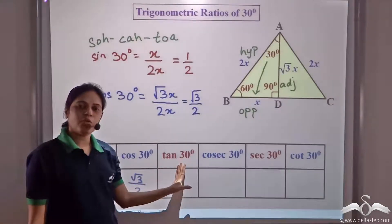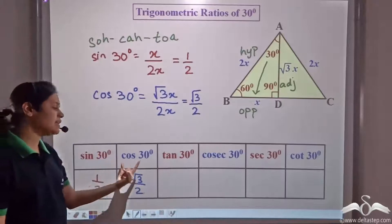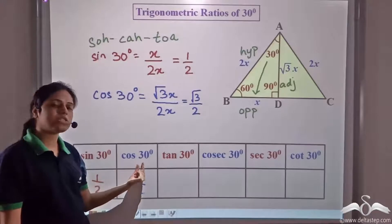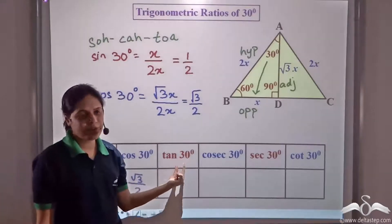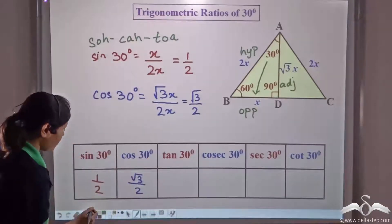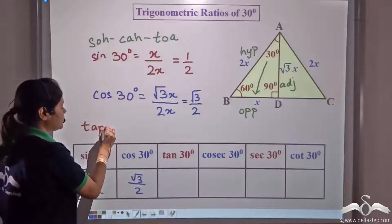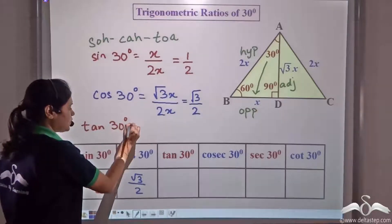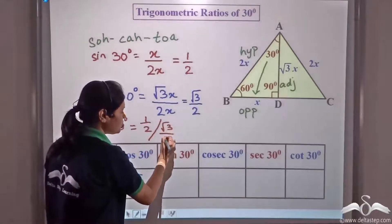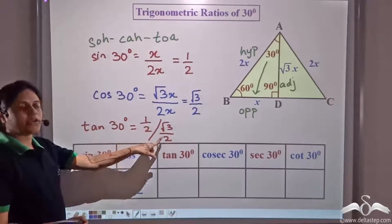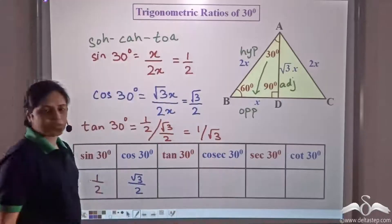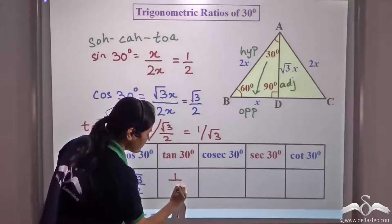Tan 30 equals sin 30 divided by cos 30, because tangent is the ratio of sine and cosine. So tan 30 = (1/2) ÷ (√3/2). The 2s cancel, giving tan 30 = 1/√3.